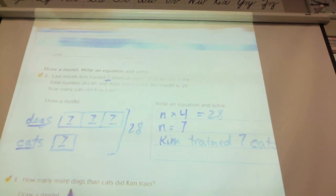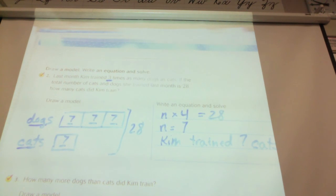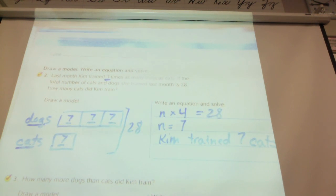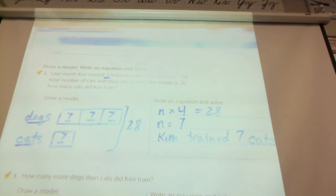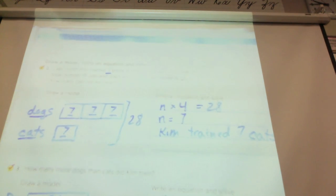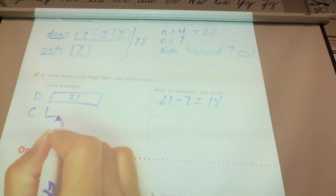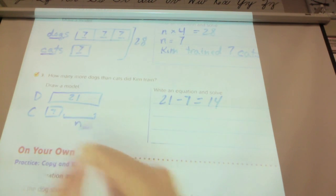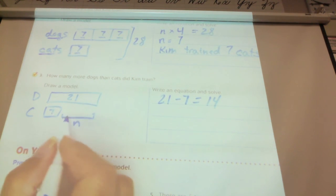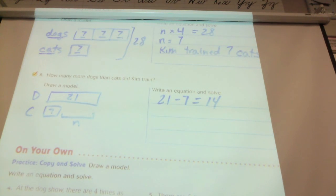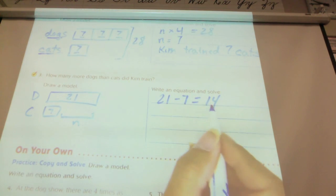How many more dogs than cats did Kim train? Well, we just decided that Kim trained 21 dogs. And how many cats? Seven. Seven. So we could do it this way. Or if we wanted to draw a model. Here with the dogs. That was 21. Okay. Sorry. That was 21 for the dogs. And for the cats was seven. And we would be looking for this. 21 total, seven cats. What is the difference here? So we could do 21 minus seven equals 14.